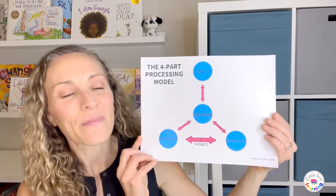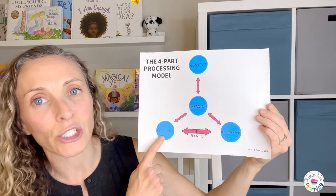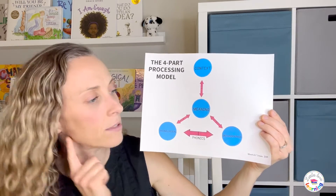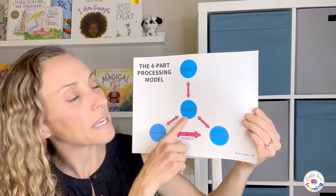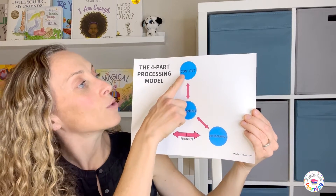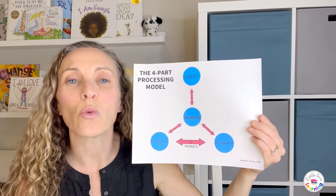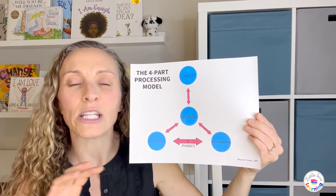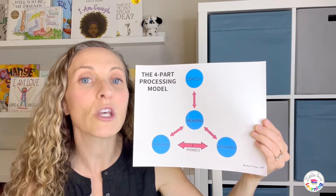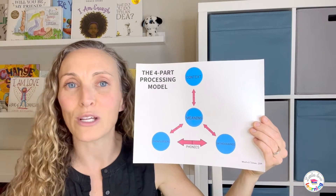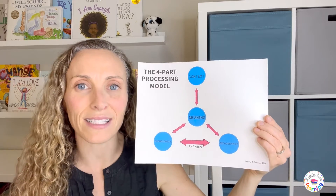The four processes of this four-part processing model include: phonological — that's the sound, the way the word sounds; orthographic — that's the spelling, the way the word is spelled; meaning — what the word means; and context — what context the word is being used in. In English, we have a lot of shades of meaning, so it's really important that we know how the word is being used, because that will definitely change the meaning. We also have a lot of homonyms and homophones, so we want to make sure we know the context in which the word is being used.